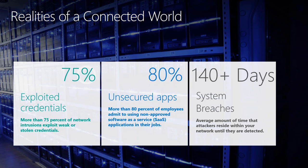A few things that are really interesting and important as we get started: 75% of the intrusions that happen on networks today are a result of exploited credentials. That simply means somebody is able to figure out or steal your user ID and password and be able to log in to a system or network for malicious purposes. About 80% of employees are accessing non-approved software or Internet websites throughout the course of their day from company-owned equipment or a company-owned network. And when there is a breach, it's about 140 days on average before that breach is detected and measures are taken to close it down.